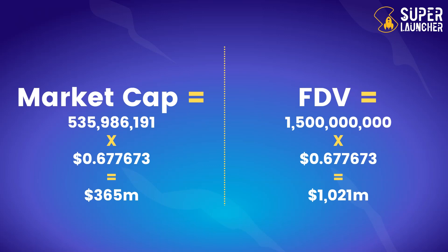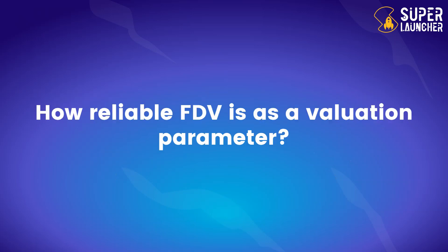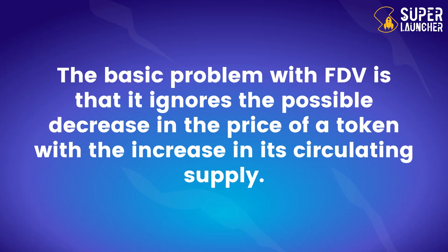FDV can be used as an indication of the future value of a project, but how reliable is it? The basic problem with FDV is that it ignores the possible decrease in the price of the token as its circulating supply increases. When more tokens are in circulation, there is usually higher selling pressure and the price can decrease over time. FDV is most useful when comparing projects with similar tokenomics.